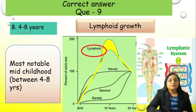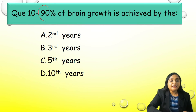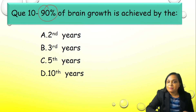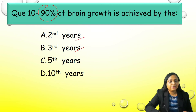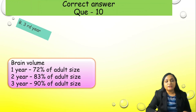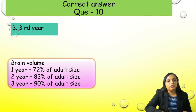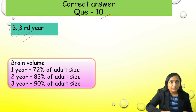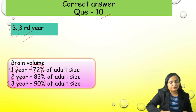Question number 10: 90% of brain growth is achieved by — A) second year, B) third year, C) fifth year, or D) tenth year. Correct answer is option B, by the third year. Remember this statistic from the table: by 1 year, 72% of adult brain size is achieved; by 3 years, 90% of adult brain size is achieved.